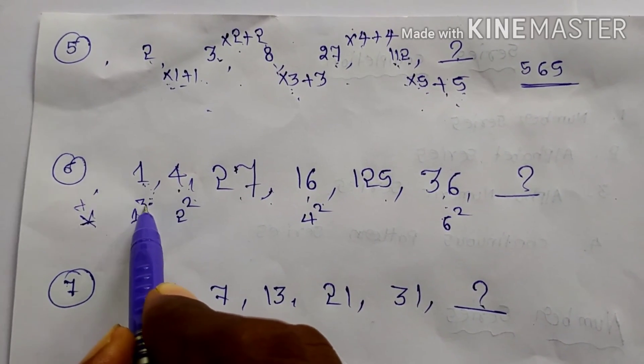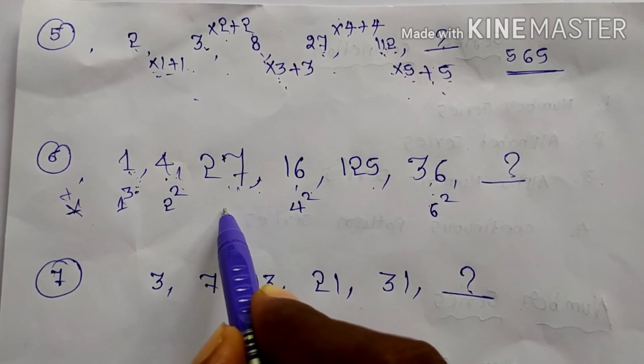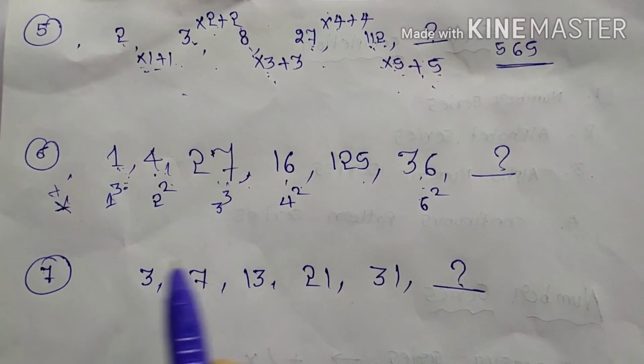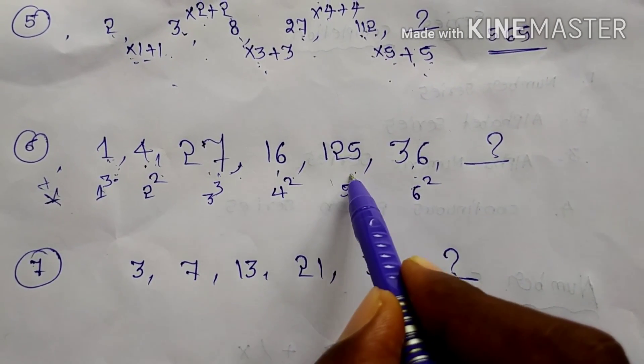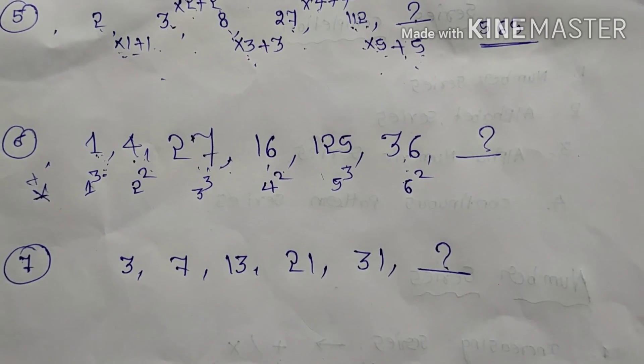Now you can see. 1, I am writing as 1 cube. 27 is 3 cube. 3, 3 into 3, 27 only. 5 cube. Next which number will come.